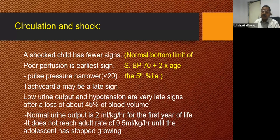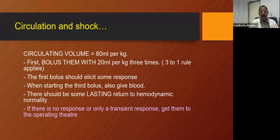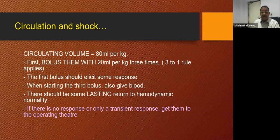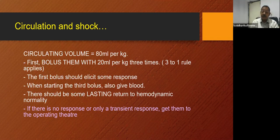Circulating volume is 80 ml per kg. Give first bolus of 20 ml per kg up to three times, then apply the three-to-one rule: after three boluses along with starting blood. The first bolus should elicit some response. When starting the third bolus with blood, there should be some lasting return to hemodynamic normality. If there is no response or only a transient response, get them to the operating theater.